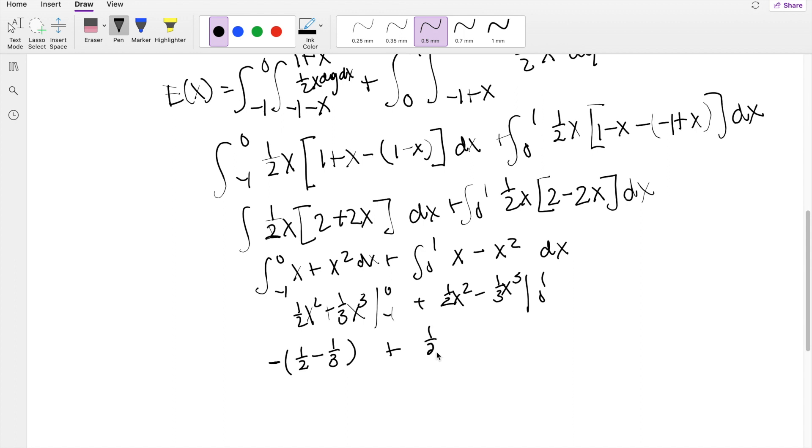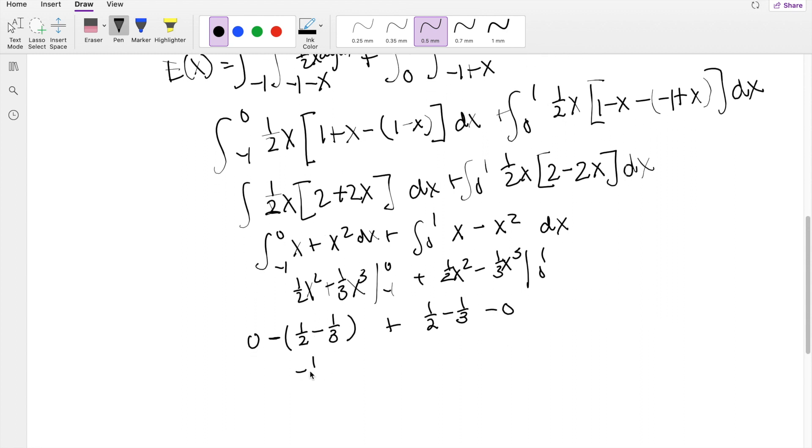upper limit is 1 half minus 1 third, lower limit is just 0, so you get 0 minus this, and then this is minus 0. So essentially you get negative 1 half plus 1 third plus 1 half minus 1 third, which is equal to 0.